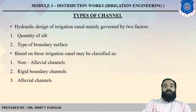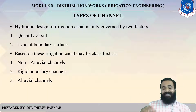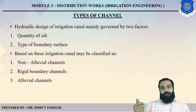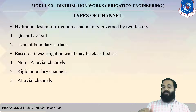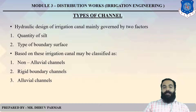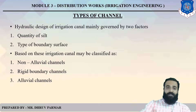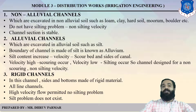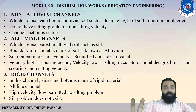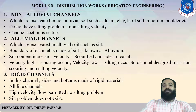Next, types of channels. In this subject, channels are governed by two factors: quantity of silt and which type of boundary surface is used. Based on this, irrigation canals may be classified into three types: non-alluvial channel, rigid channel, and alluvial channel. A non-alluvial channel is one excavated in non-alluvial soil like loam, clay, moorum, or boulder.